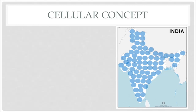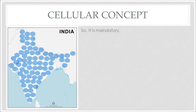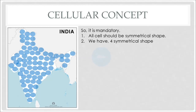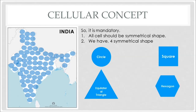As the city is divided into small cells, it is mandatory that all cells should be a symmetrical shape. Based on theory, we have four symmetrical shapes: circle, equilateral triangle, square, and hexagon.